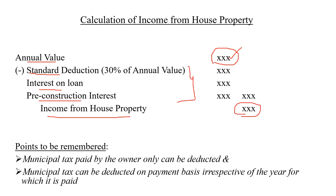The first deduction is standard deduction, which can be claimed at 30% of annual value — whatever answer you have as annual value, you claim 30% on that. Then interest on loan: if the property is constructed out of borrowed money, the interest paid on that loan can be claimed as a deduction. This value will be given in the question. Then pre-construction interest — write the amount in the inner column, add all three values, bring it to the outer column, and deduct from annual value to get income from house property.